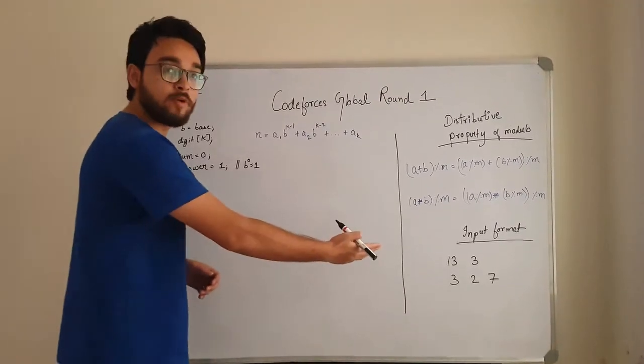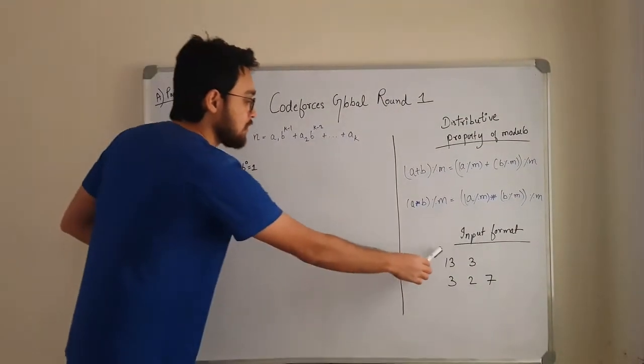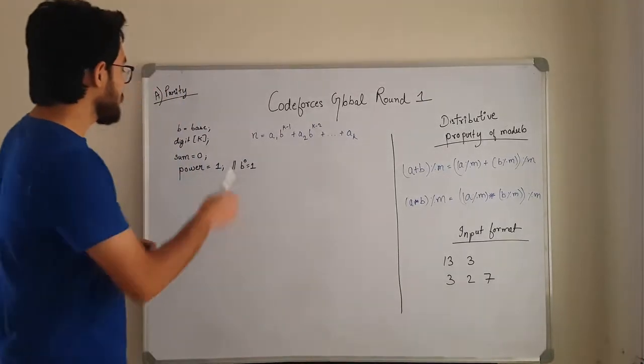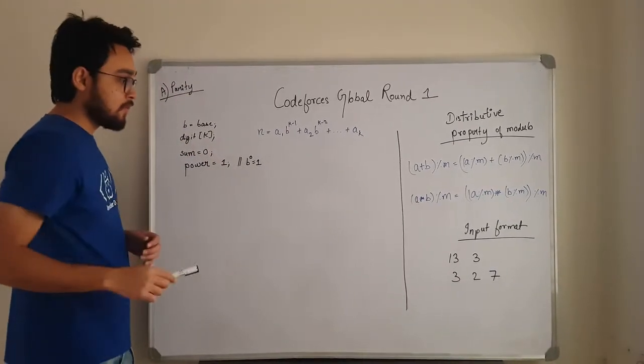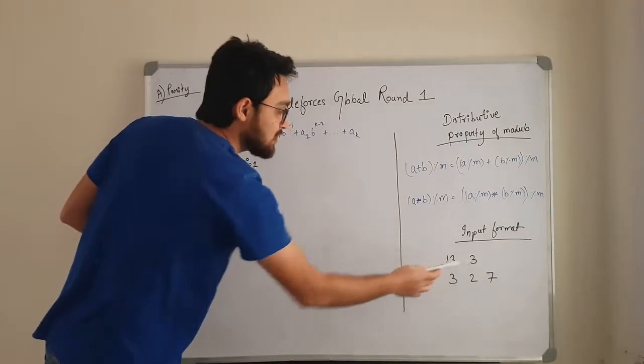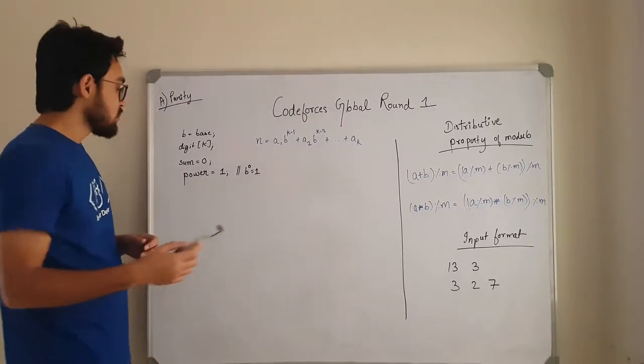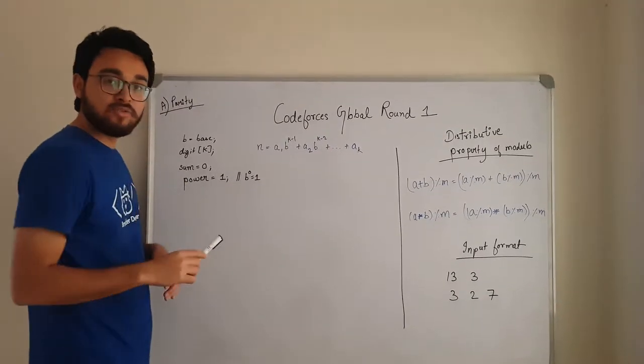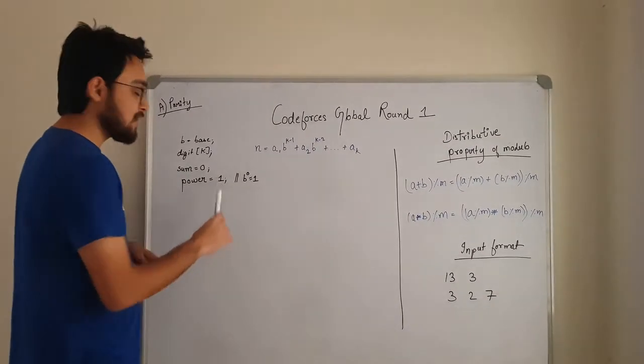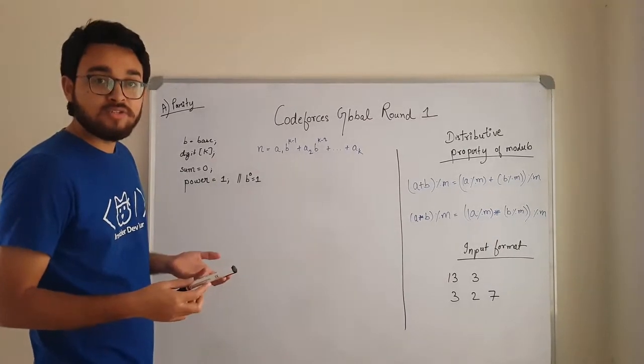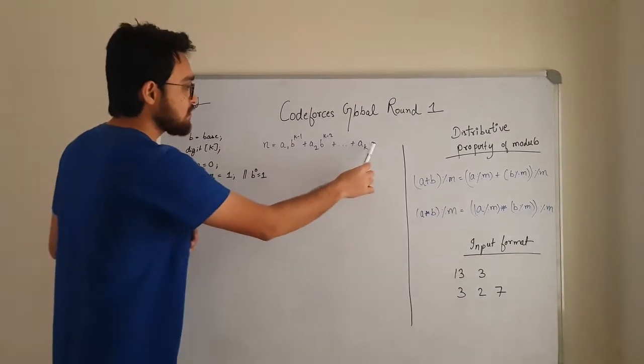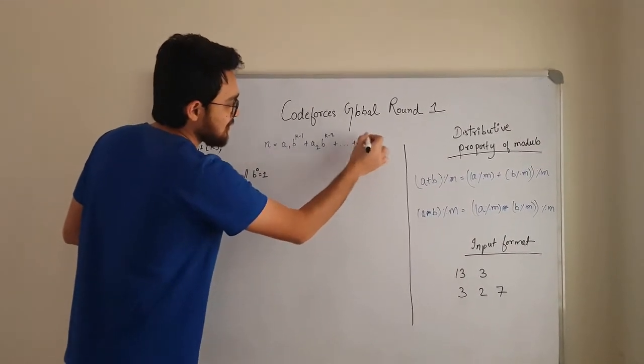Now let's look into the input format. We have given the base b, so we have taken the base in b. Now we have given the number of digits. So we have stored that in an array called digit k. Now the sum is initialized to 0 and power is initialized to 1. Power is initialized to 1 because b to the power 0 is 1.